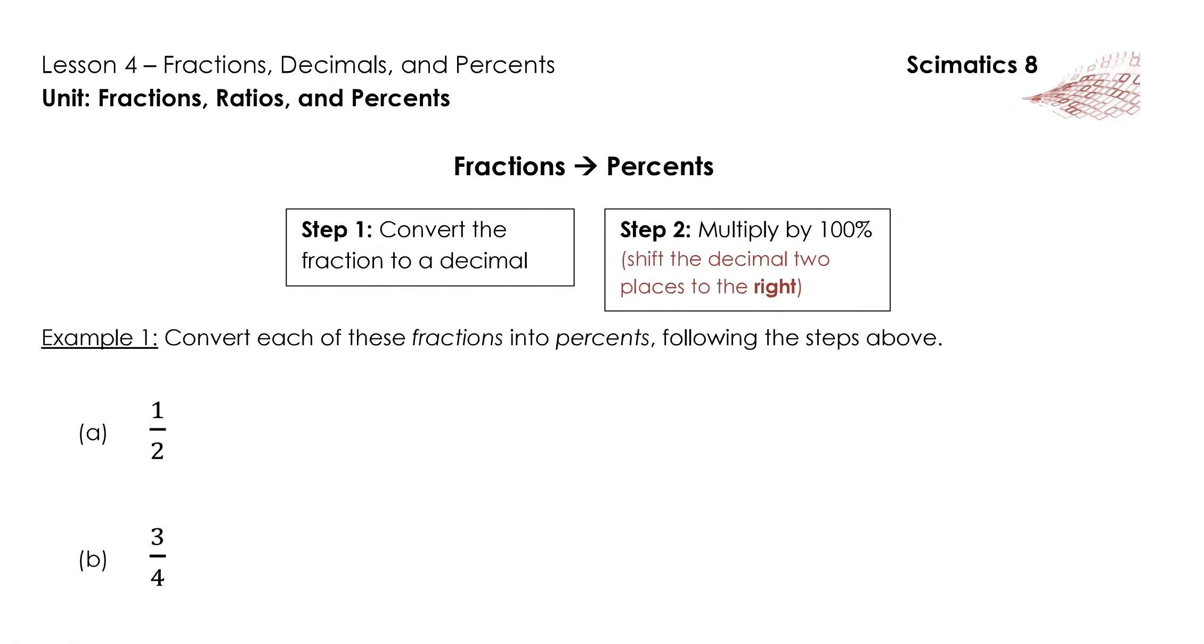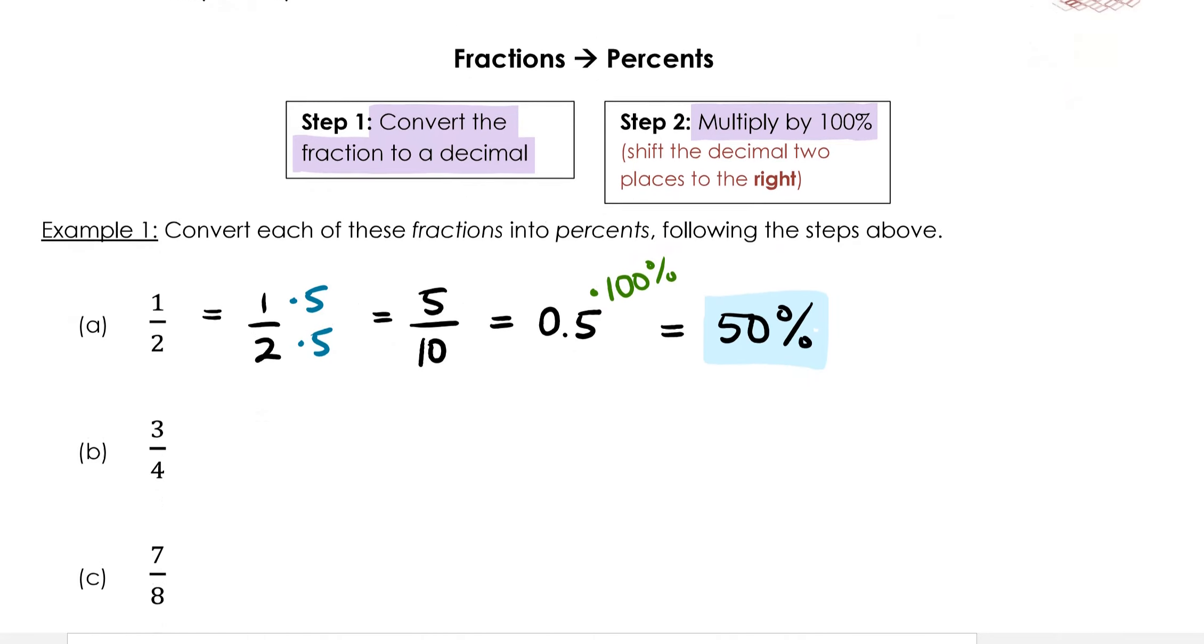How do we convert fractions to percents? Step one, we convert the fraction to a decimal. And step two, we multiply that decimal by 100%, which is equivalent to shifting the decimal place two places to the right. For one half, for example, we convert this into a decimal either using our calculator to go 1 divided by 2, or using the method that we practiced above by converting the denominator into 10, 100, or 1000. I'm going to try and do this manually. So one half times 5 over 5 equals 5 over 10, which is 5 tenths. If we multiply our answer by 100%, this moves the decimal place two to the right, and our final answer is 50%.